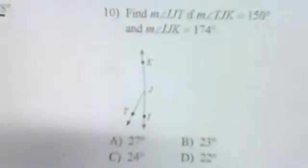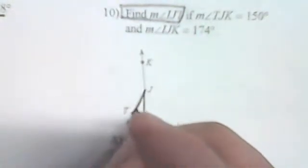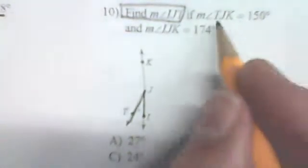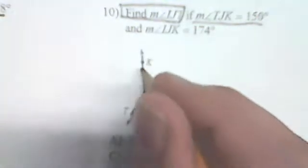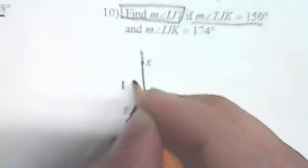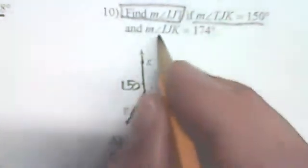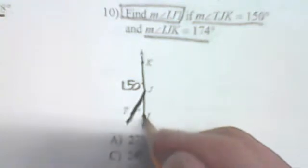They give us what we have to find at the beginning: angle IJT. Put that in a box. They tell us angle TJK is 150 degrees — write 150 in there. Labeling your diagram is one of the most useful things. Then IJK equals 174 degrees, which is the entire angle from I to J to K.